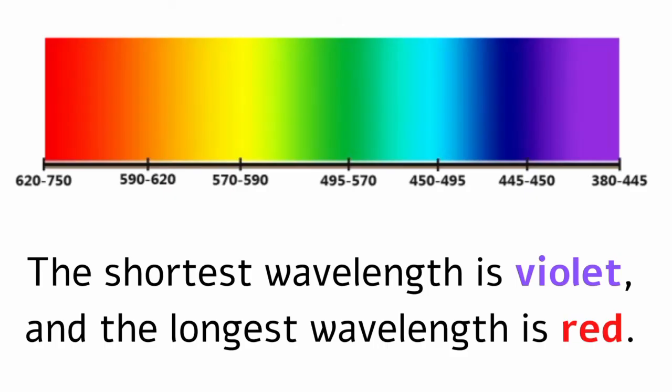Within the band of visible light, the different wavelengths are perceived by people as different colors. The shortest wavelength is violet, and the longest wavelength is red.